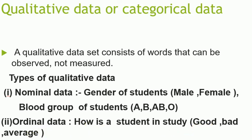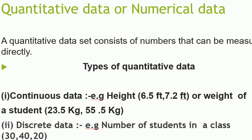Next is the quantitative or numerical data. Quantitative data is a set of numbers that can be measured directly. There are two different types of quantitative data. One is continuous data like the height or weight of a student. There is no gap between the two digits like 6.5, 7.2 feet, or weight is 23.5 kg, 55.5 kg and so on.